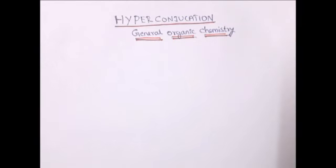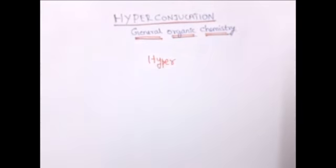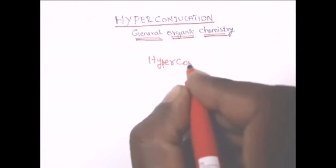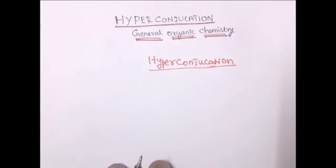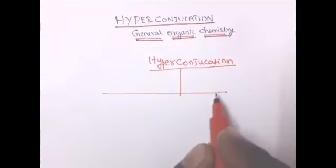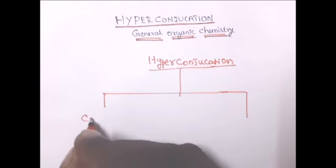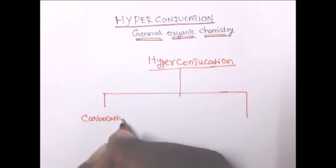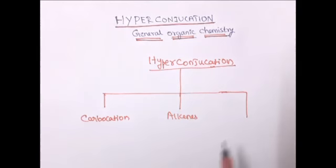Today's topic is Hyperconjugation from General Organic Chemistry. This topic is very important for your exam and also very difficult to understand if you study from the textbook, so I will explain it very easily here. Hyperconjugation usually takes place in Carbocation, Alkenes, and Free Radicals.